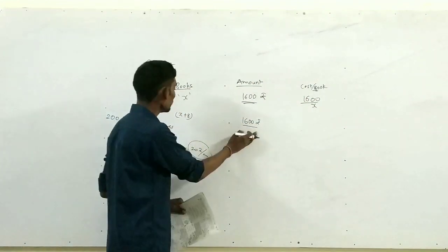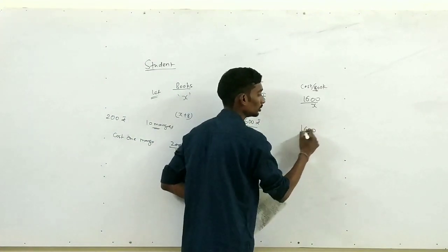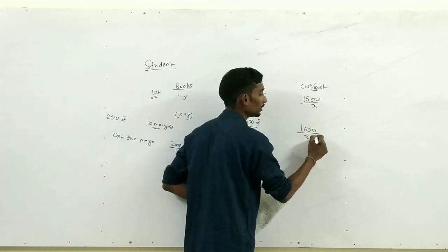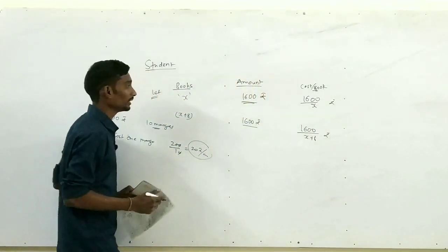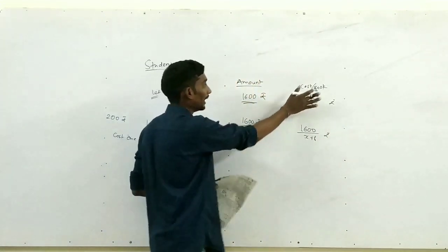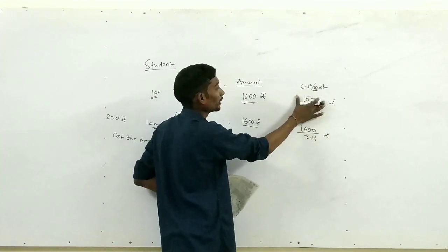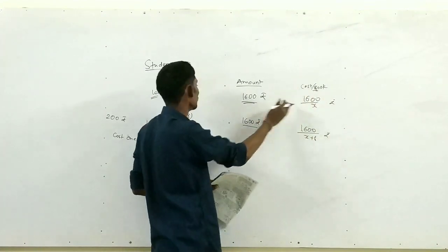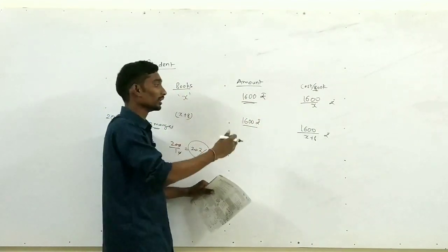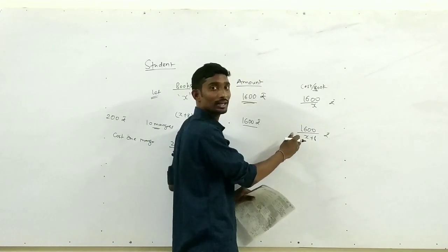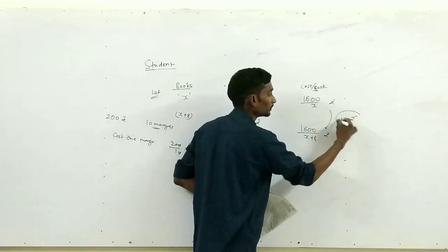Similarly, ₹1600 में x+8 books खरीदे, तो एक book की cost होगी 1600/(x+8) रुपये। Question में दिया है कि पहली situation में cost per book ज्यादा होगी क्योंकि कम books खरीदे, और दूसरी situation में cost per book कम। इन दोनों का difference 10 रुपये है।